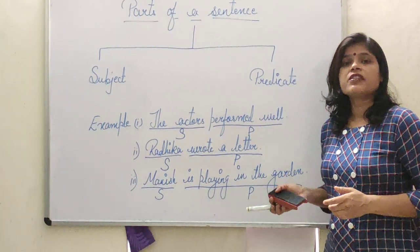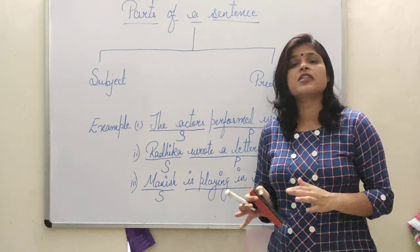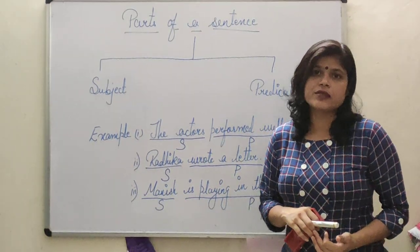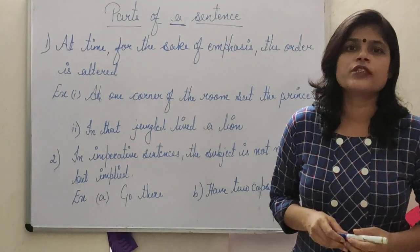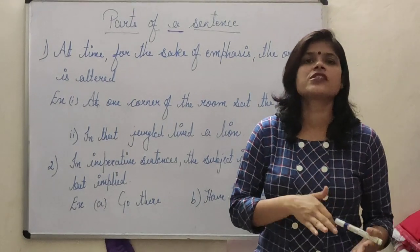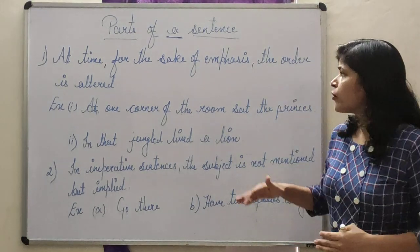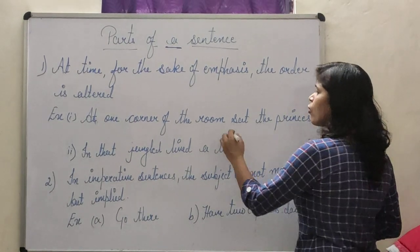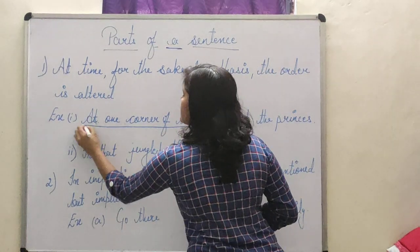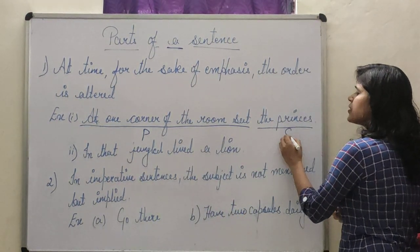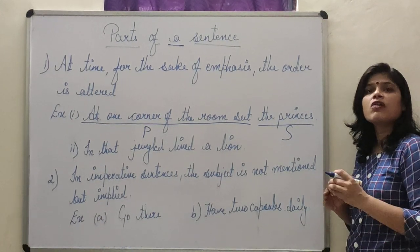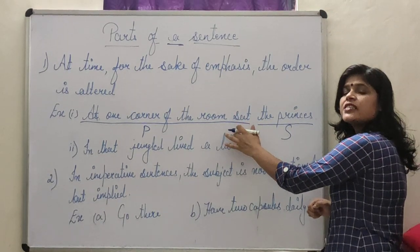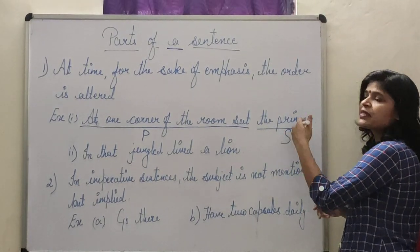Now we are going to see the exceptions. Sometimes the predicate comes first and the subject goes after the predicate. For example: 'At one corner of the room said the princess.' Here 'at one corner of the room said' is the predicate, and 'the princess' is the subject. The order has been changed because the emphasis is on 'at one corner of the room said.'